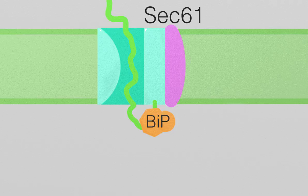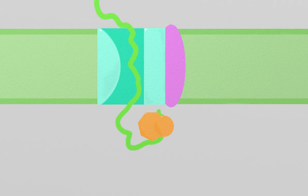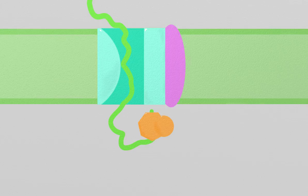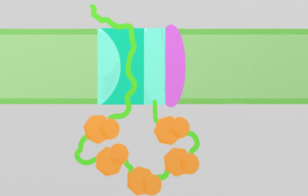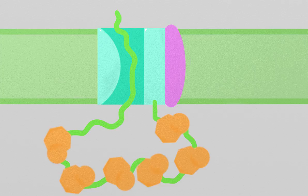When the protein binds this SEC61 translocon, a small part of the protein extends into the ER lumen. This region is immediately bound by a protein called BIP, which prevents the protein from slipping back out of the channel. Particles in a fluid are subject to random movement called Brownian motion, so the protein jostles around in the channel. This causes new regions to emerge in the ER lumen, and as soon as a new portion of the protein enters the ER, BIP binds and prevents it from reversing back out.